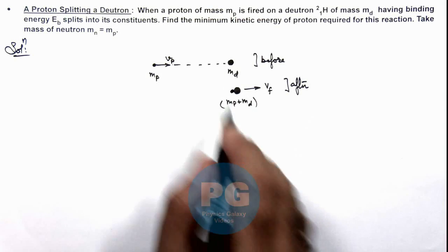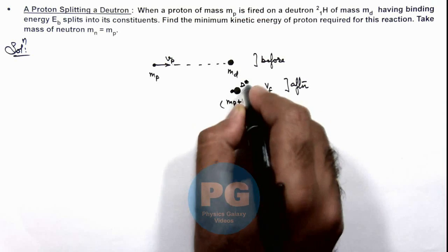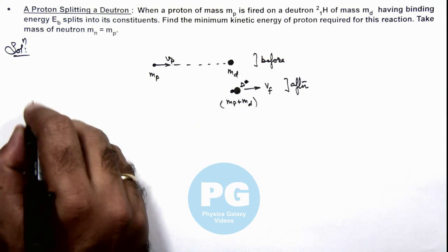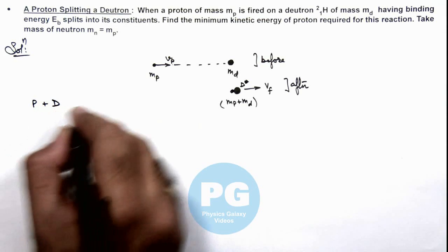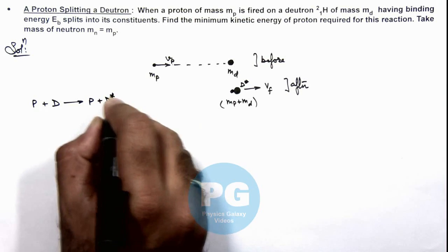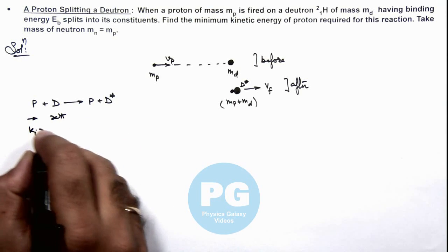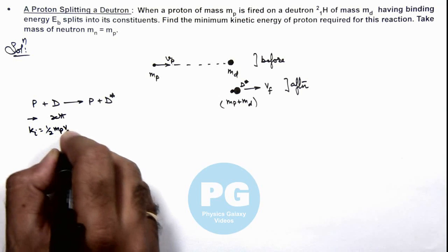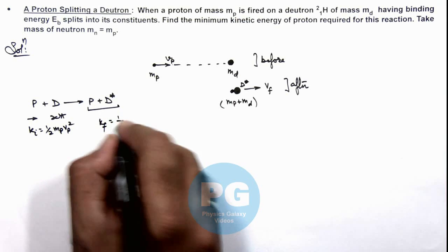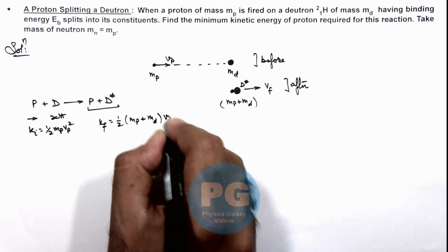After collision, this deuteron will transform to d-star, where d-star is the excited deuteron. So when the proton reacts with d, it transforms d to d-star. This was at rest and the proton was moving with initial kinetic energy equal to half mp vp squared. Finally, these 2 are moving together with final kinetic energy equal to half times (mp plus md) times vf squared.